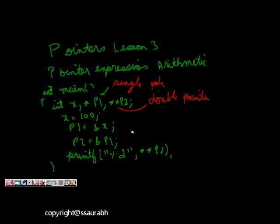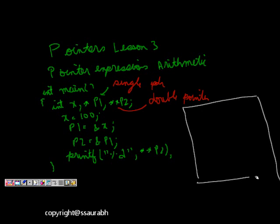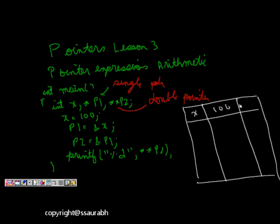So what does a double pointer do? If we make a memory map, that will be much easier to understand. So we have variable x at memory address 100, it has a value of 100. This column is memory address, this is value, and this is the variable name. It is of type int.